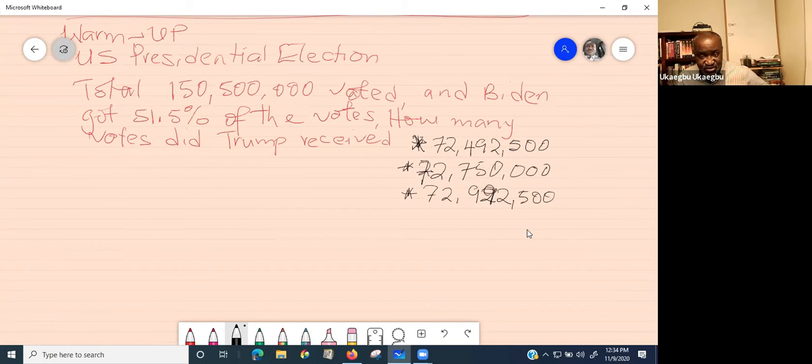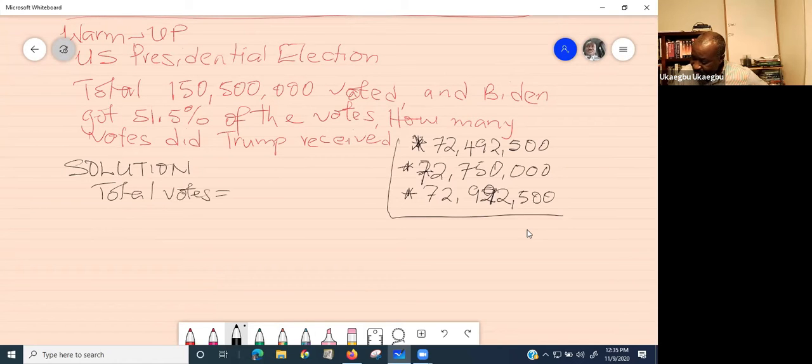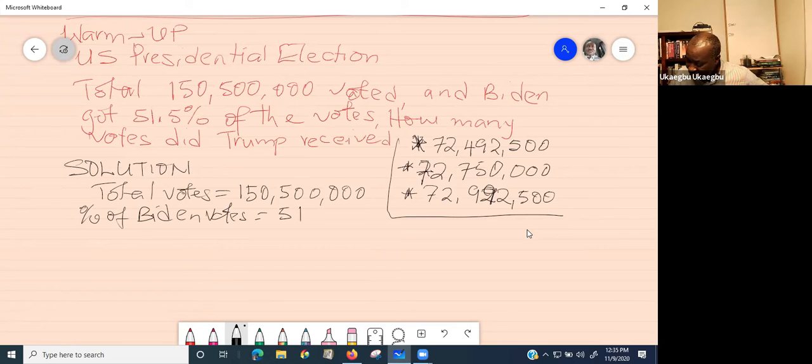Thank you for the effort. You make effort, then we check it out. There are two numbers given to us. Let's work it together. Solution: total votes is equal to 150,500,000, and percentage of Biden votes is equal to 51.5%.